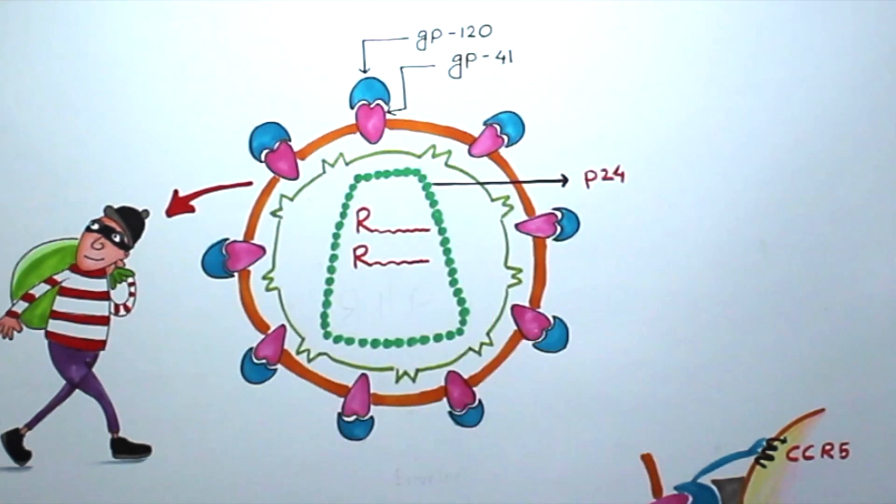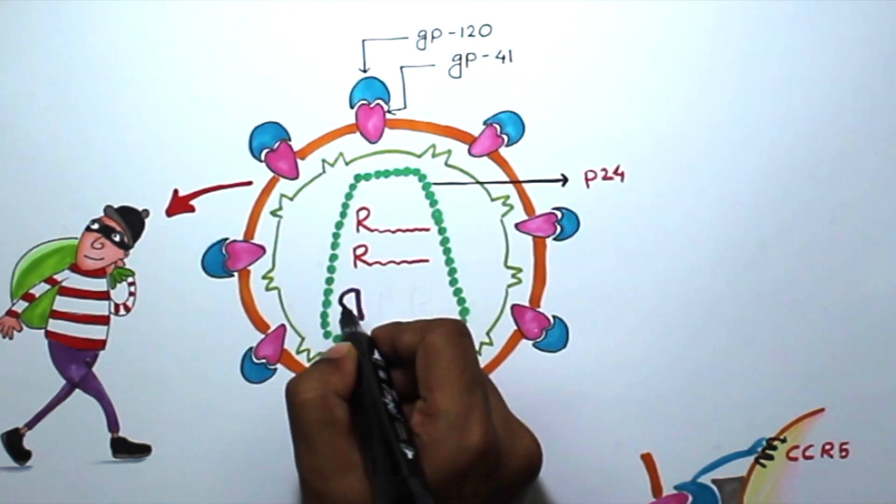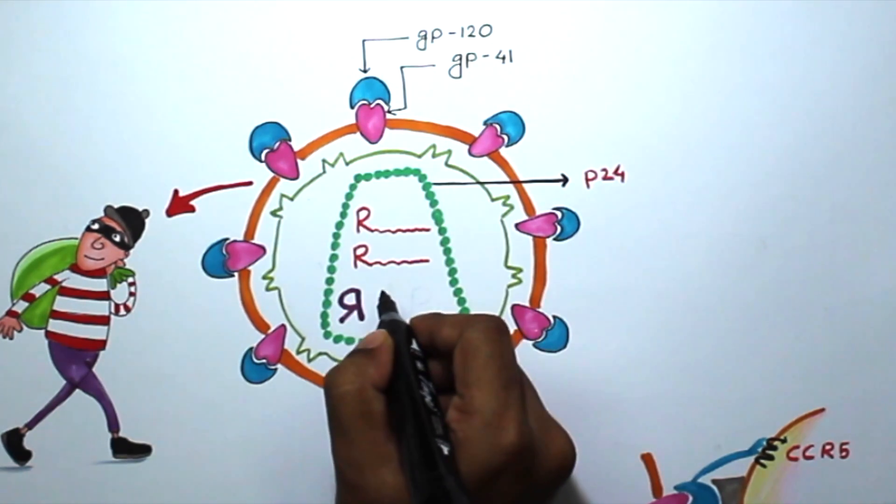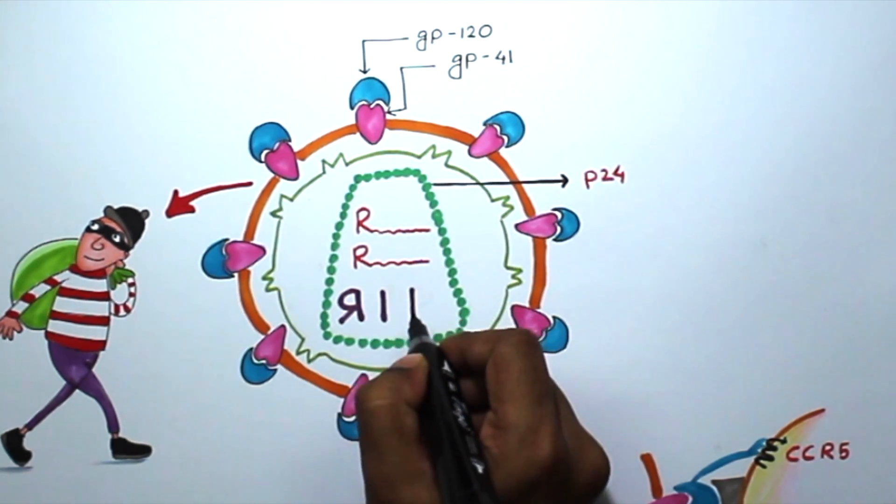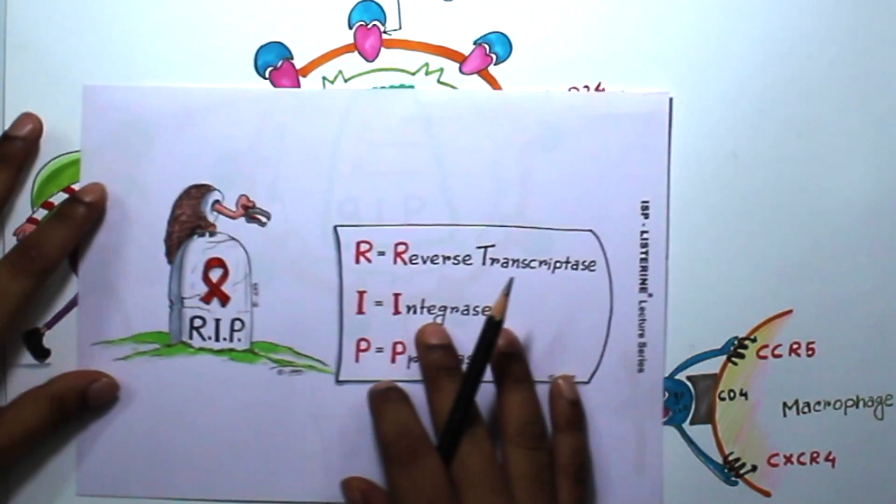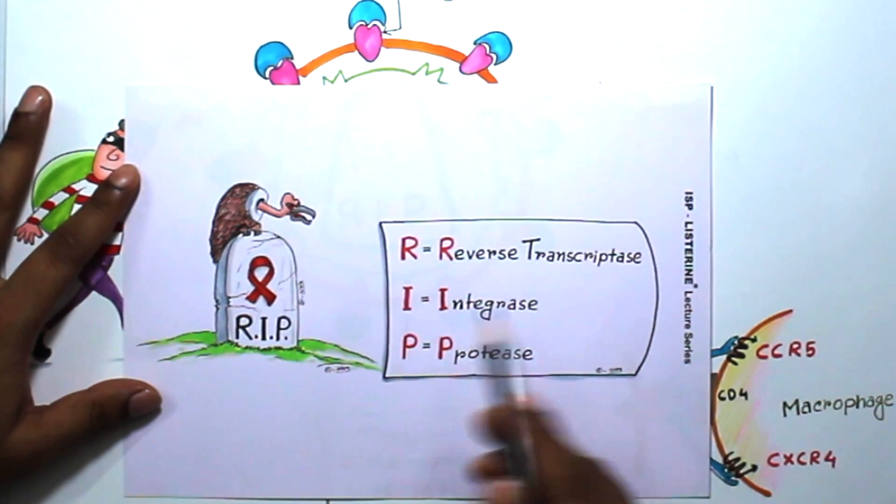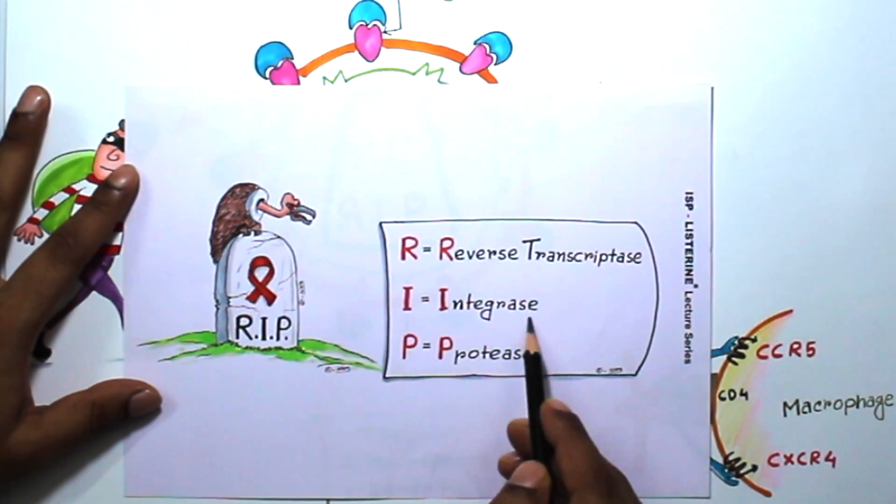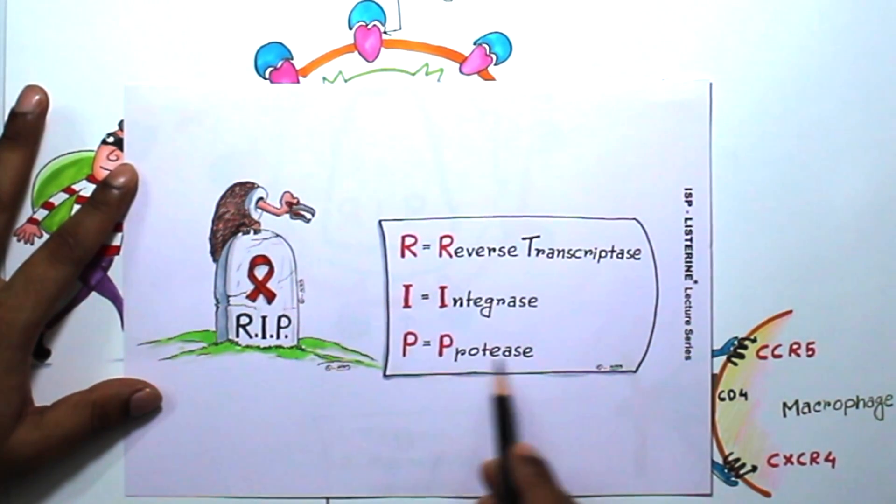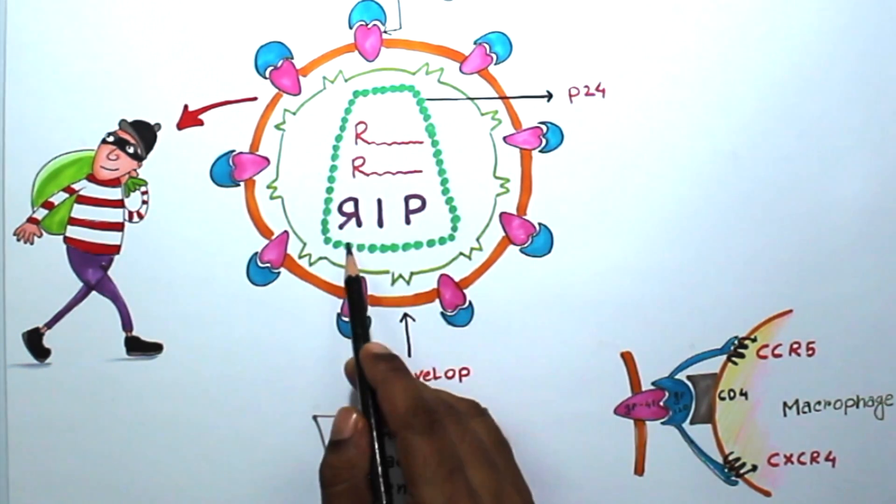The capsid also contains three important enzymes which are necessary for the replication process of HIV. You can remember it like this: RIP, rest in peace. I have already made a picture here. R stands for reverse transcriptase, I stands for integrase, and P stands for protease. And here the R is reverse, so you can remember that it is reverse transcriptase.